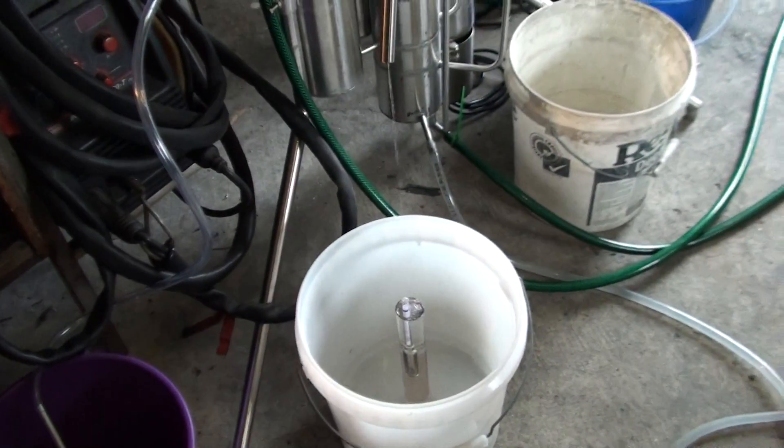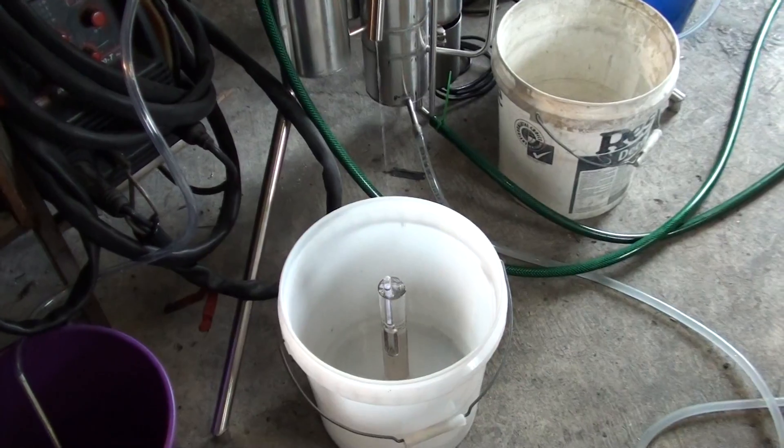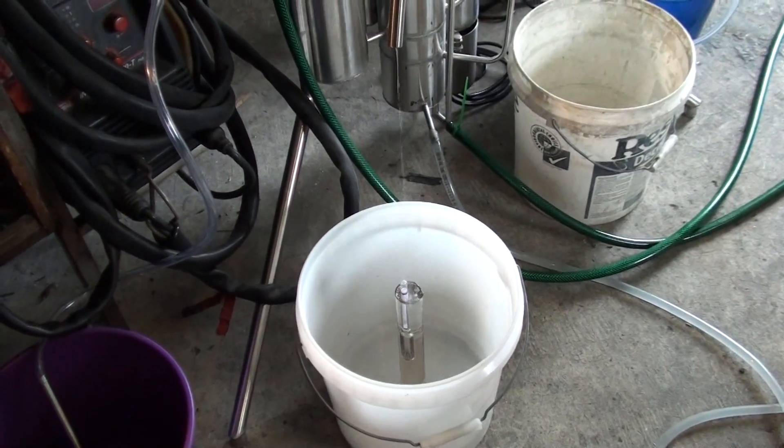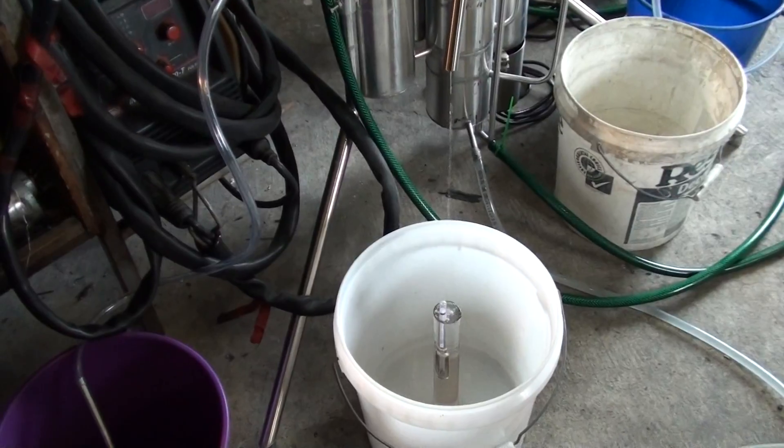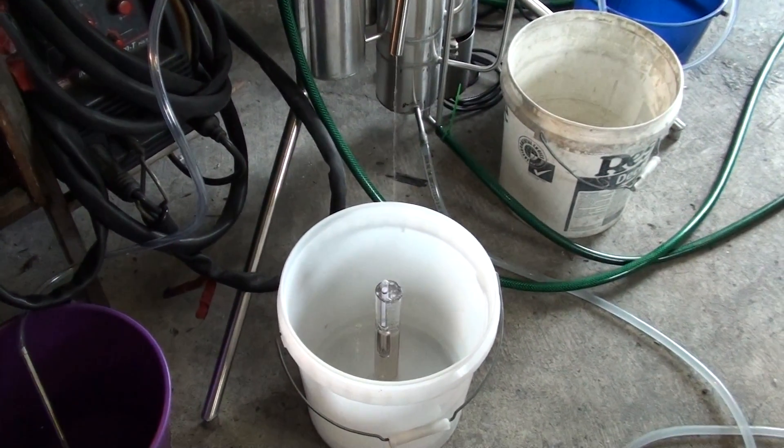Production rate will be heavily dependent on the amount of the actual alcohol in your wash. So if it's five percent, don't expect it to be running at five liters per hour or something, it will be much slower.